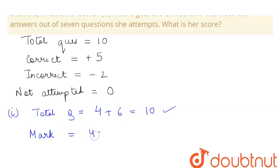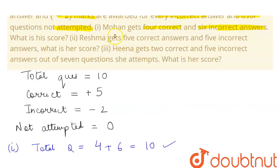Since he gets 4 correct, he will get 5 marks for each of these. So his score will be 4 × 5, plus he gets 6 incorrect, so each mark for incorrect will be minus 2, so he will get 6 × (-2). This will be equal to 20 minus 12, which is equal to 8 marks.